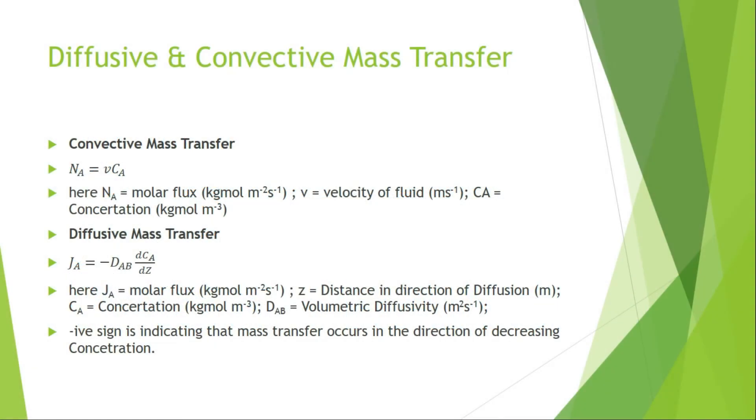In the development of a mathematical model for the process, diffusive and convective mass transfer terms must be considered. Mass transfer due to bulk movement of liquid vapor is known as convective mass transfer, while mass transfer due to Brownian movement of fluid constituents from higher to lower concentration is known as diffusion.